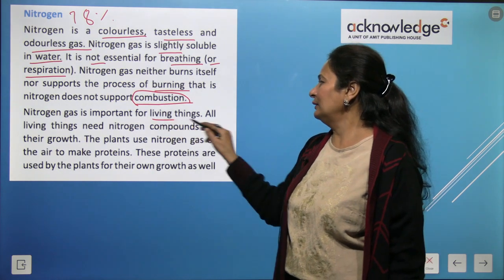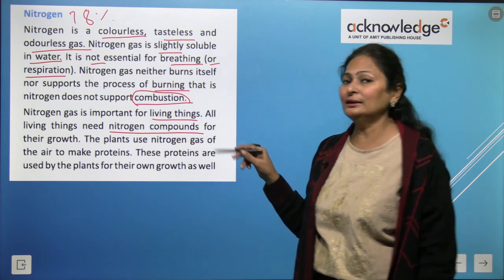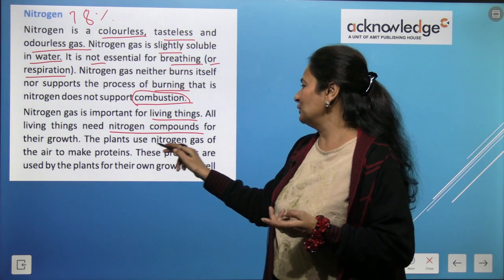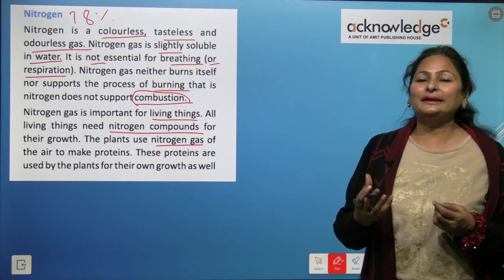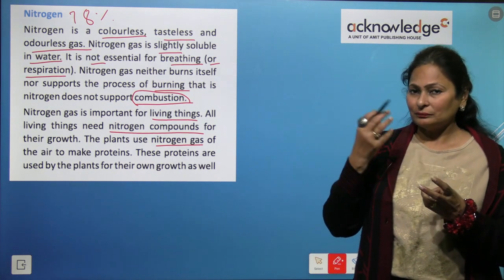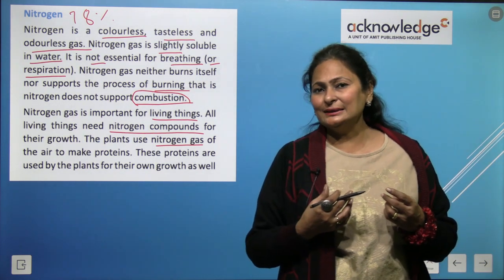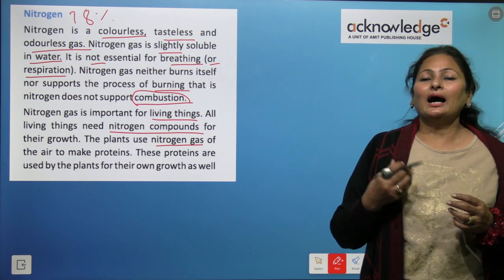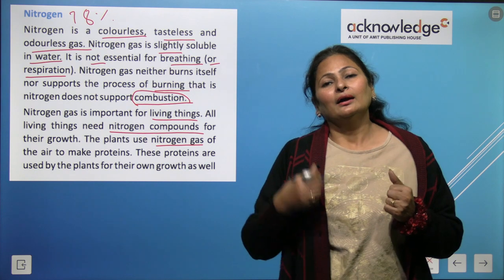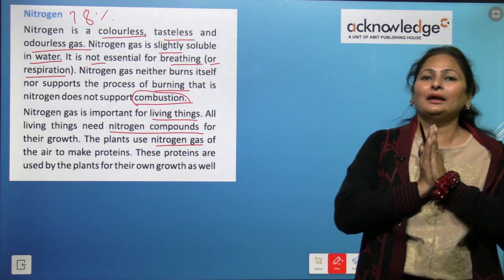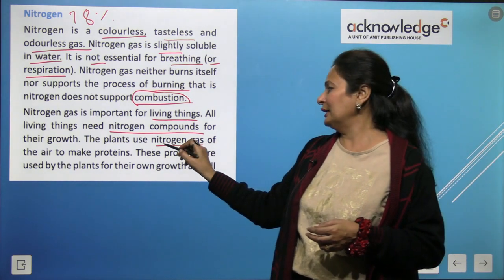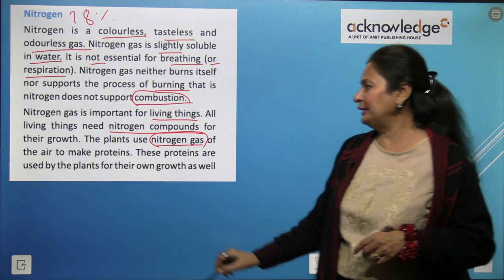Although nitrogen is not needed for breathing and does not support combustion, it is still important for living things. Plants use nitrogen gas from the air to make proteins. Plants such as pulses, vegetables, and cereals are rich in protein because of nitrogen. When we consume these plants, we get protein.